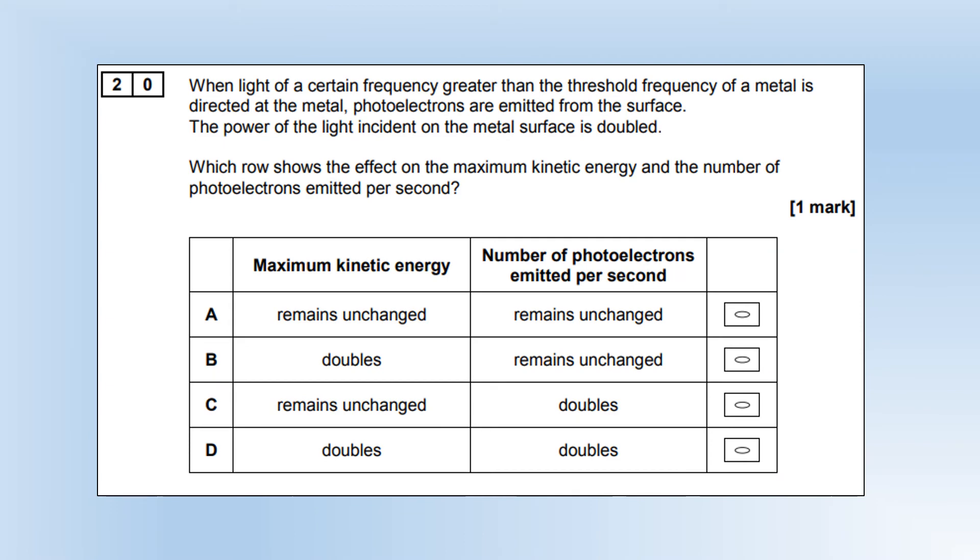When light of a certain frequency greater than the threshold frequency of a metal is directed at the metal, photoelectrons are emitted from the surface. The power of the light incident on the metal surface is doubled. Which row shows the effect on the maximum kinetic energy and the number of photoelectrons per second? If the frequency is the same, the maximum kinetic energy is the same. So it's got to be A or C. But if we have double the power, we can double the number that are emitted, because doubling the power means twice as many photons are arriving in this instance.